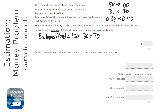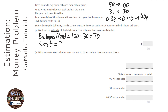Each balloon costs 0.40, or 40p. I'm going to treat that as 40p to make the calculations easier. So we need 70 balloons and they cost 40p each, so we're going to do 70 times 40p. Now, 7 times 4 is 28, and then we've got a zero for the 70 and a zero for the 40 — that's in pence — so it's going to be £28.